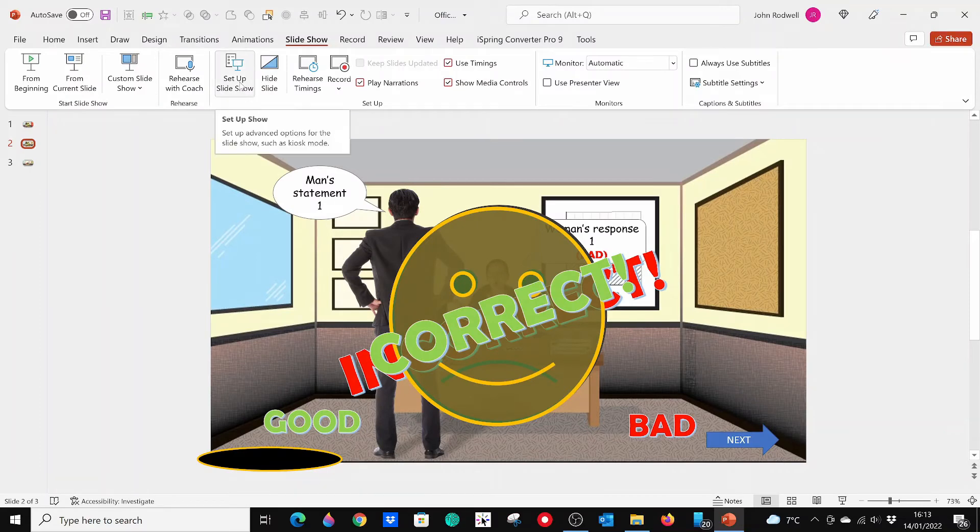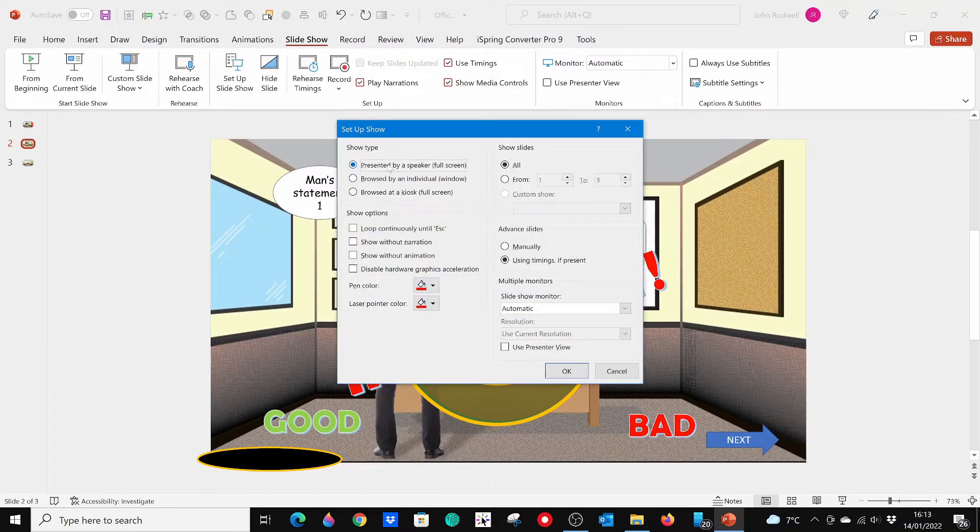When you open Set Up Slideshow from the Slideshow tab, you will see that the default setting for Show Type in the top left corner is presented by a speaker, full screen.